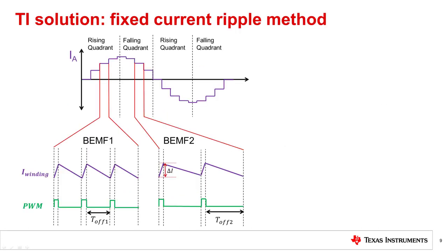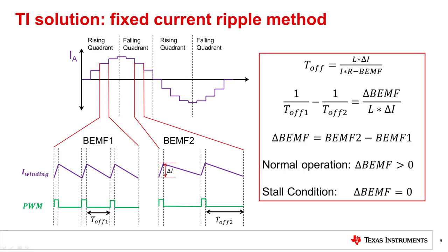TI implements a fixed current ripple algorithm to detect stall. This stall detection algorithm monitors the back EMF phase shift between rising and falling quadrants by measuring the PWM off time for both quadrants to determine if the motor is stalling. Measuring the PWM off time eliminates any dependencies on supply voltage, as the supply voltage is disconnected during the off time. The T-off time also gives a good indication of how much back EMF is present — usually, the more back EMF present, the longer the T-off time will be. This algorithm uses the delta of the T-off reciprocal between the rising and falling quadrants to estimate the change in back EMF.